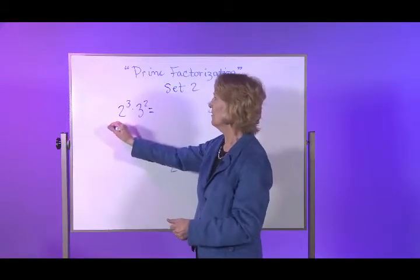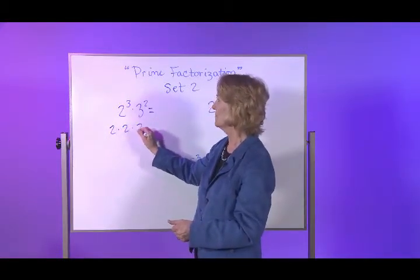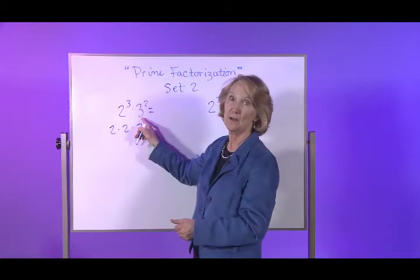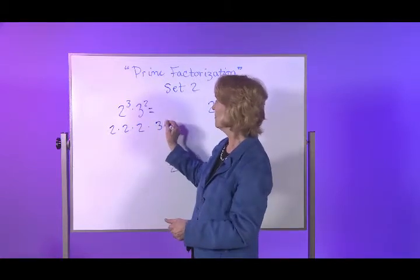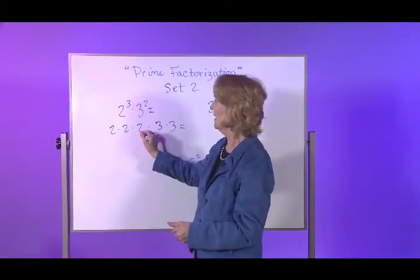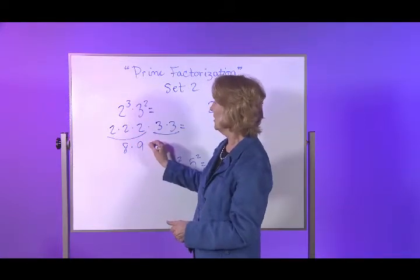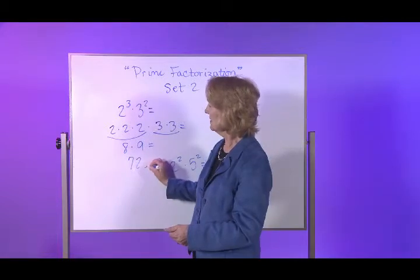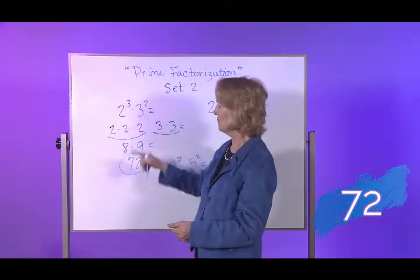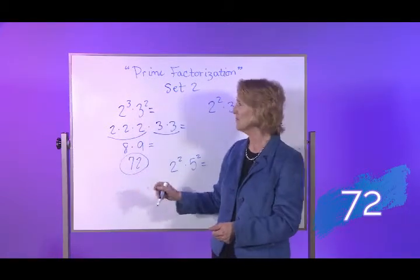2 to the third power means 2 times 2 times 2. It's being multiplied by 3 to the second, which means 3 times 3. That's 8. That's 9. So 8 times 9, the number is 72. That's the prime factorization for this standard number.